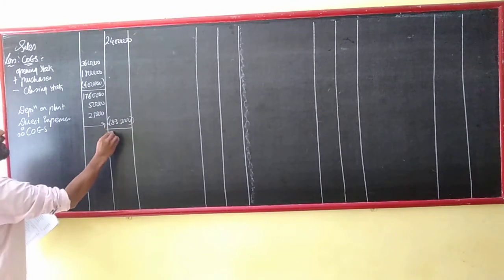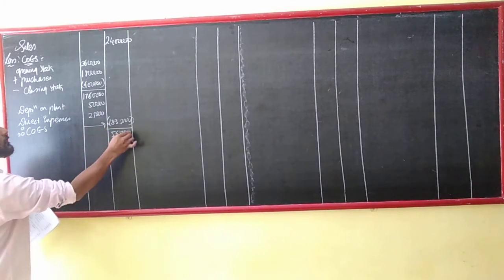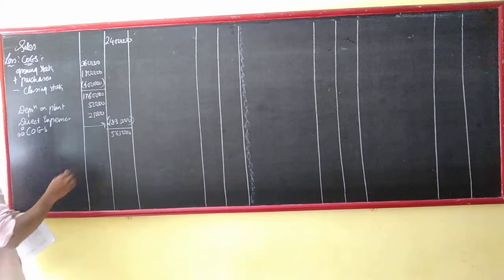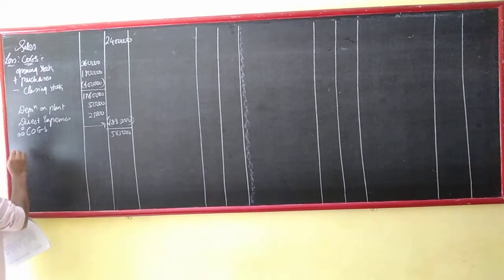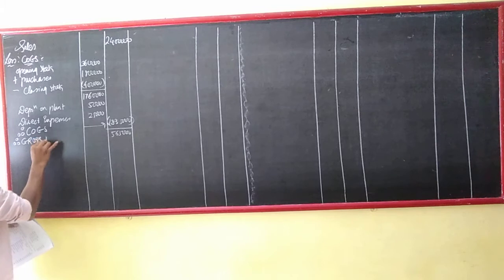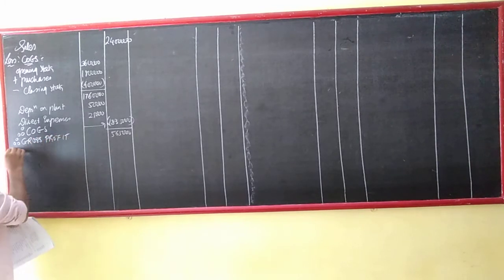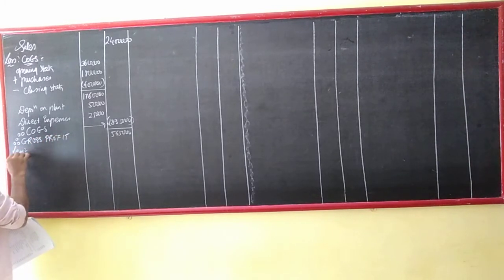You may have gross profit. 565,000. Therefore, gross profit.